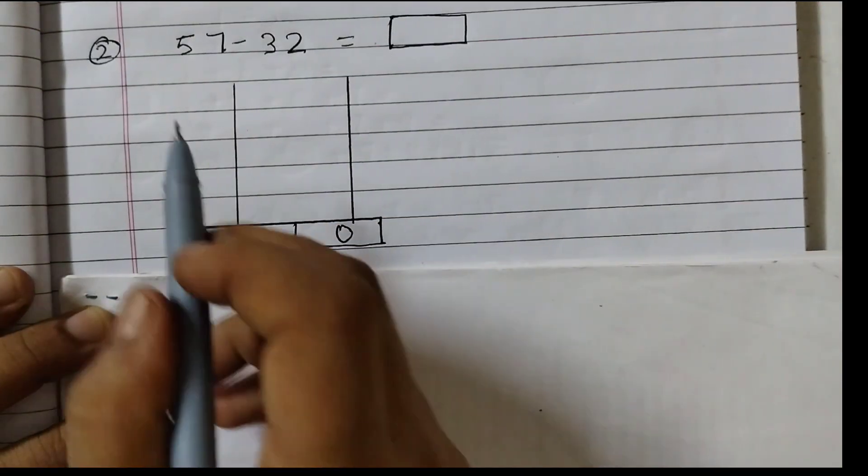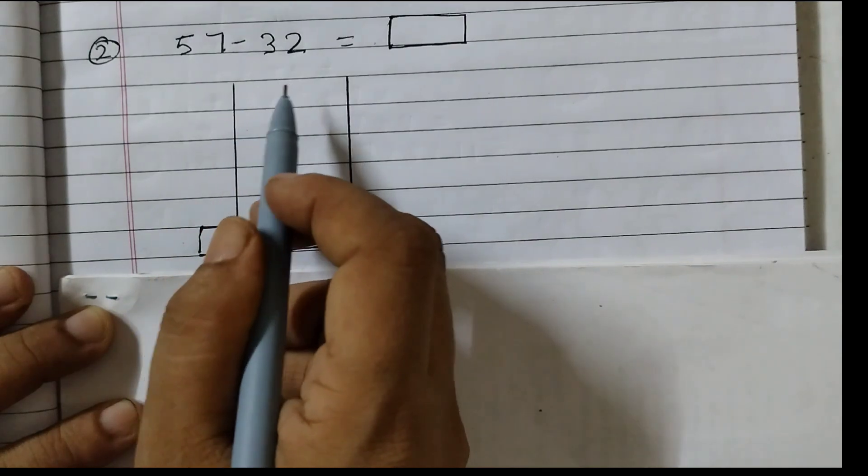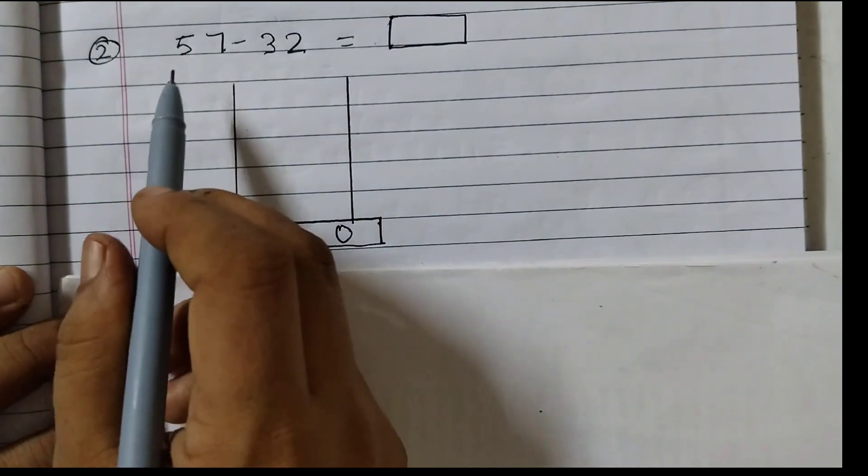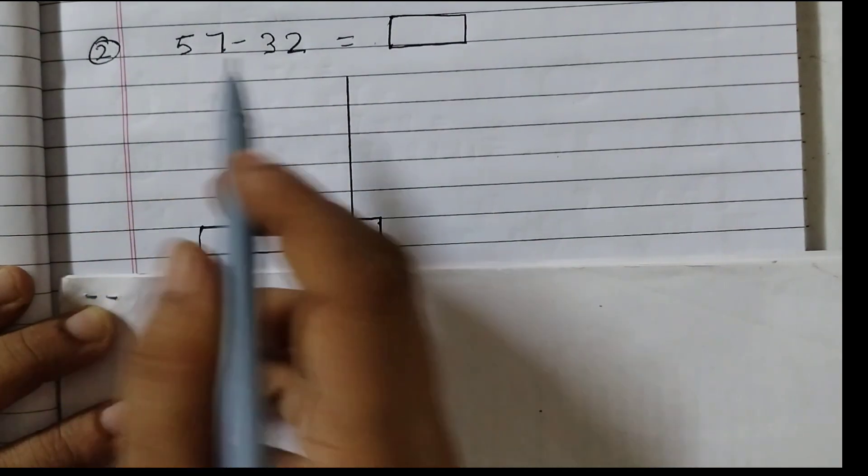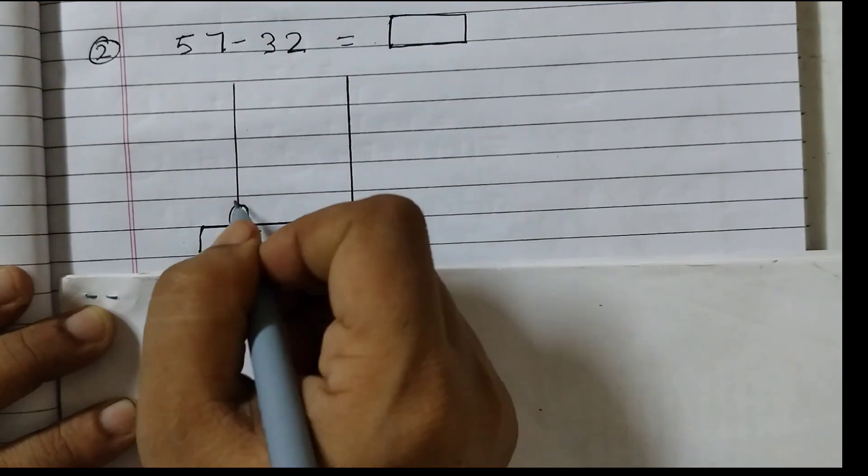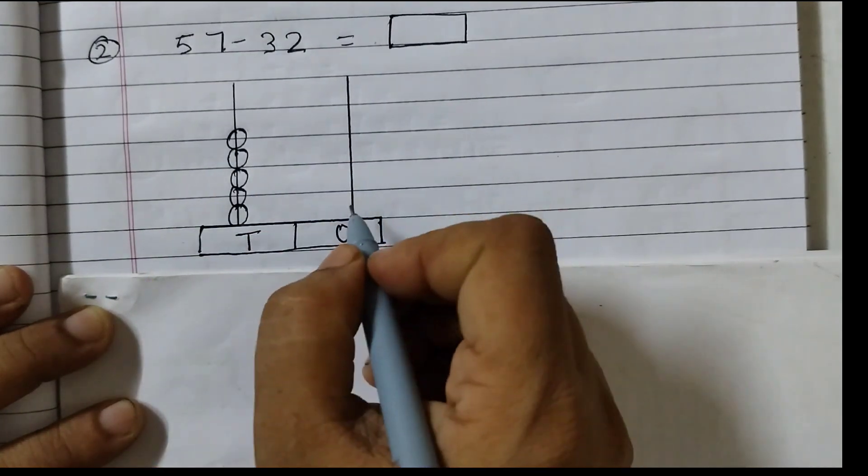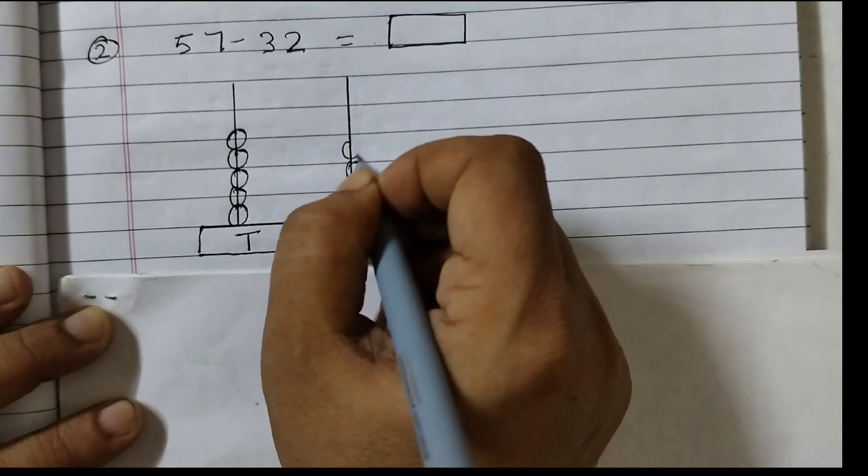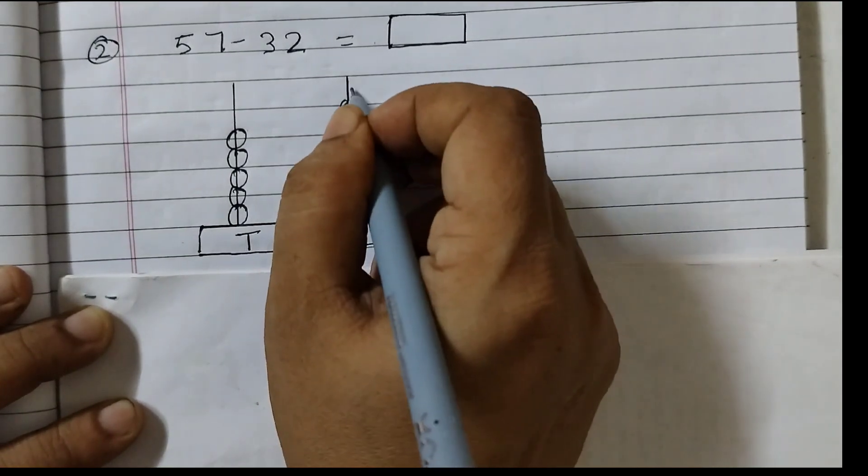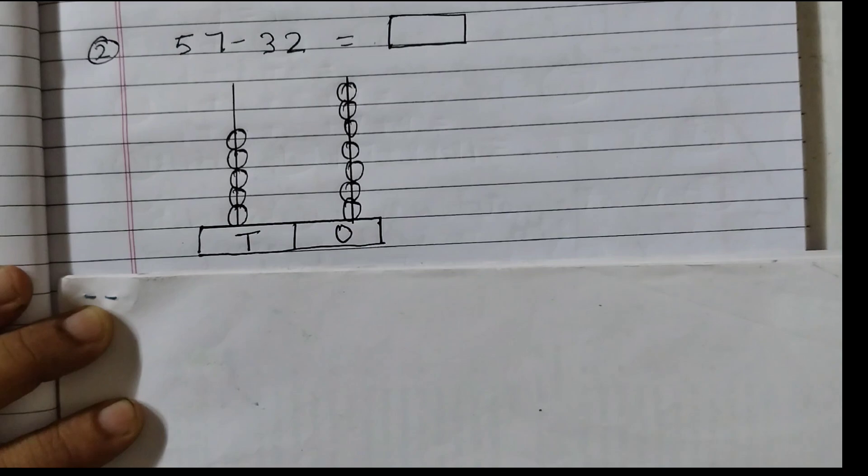Let us do the next one. 57 minus 32. First we will put the beads. 5 tens, 7 ones. 1, 2, 3, 4, 5. 5 tens. 1, 2, 3, 4, 5, 6, 7. 7 ones.